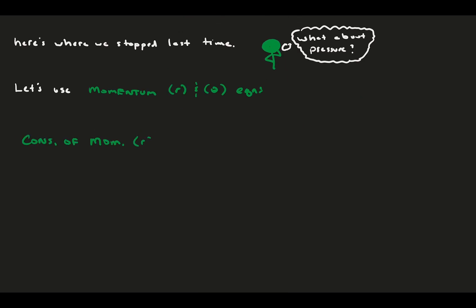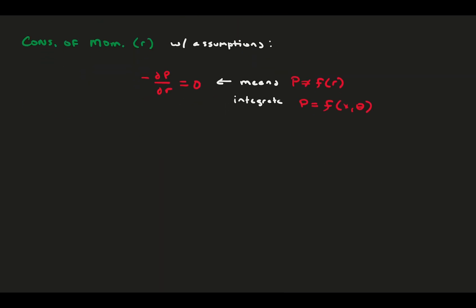Starting with the r-momentum equation, we can write it down with the assumptions already applied and the knowledge that u_r is zero from conservation of mass. This tells us that the pressure gradient in the radial direction is zero. This means that pressure is not a function of r, and if we officially integrate it, we can say that pressure must be a function of x and theta, the other two variables in the system.